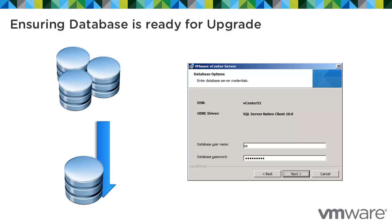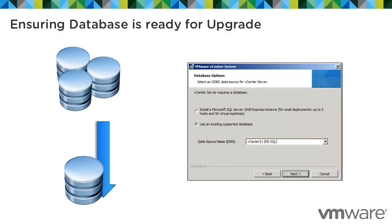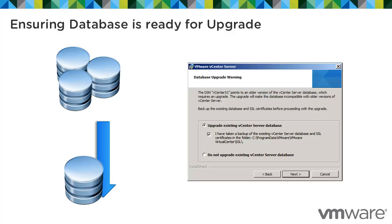For a vCenter Server upgrade, you will be asked to authenticate with database credentials. For a vCenter Server 5.1 upgrade, select "Upgrade the existing vCenter Server database." You will also have to confirm that you have backed up the vCenter Server database and backed up the SSL certificates. The upgrade will not continue until you select this option.